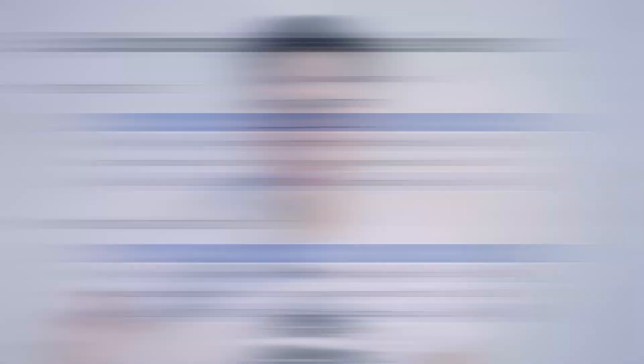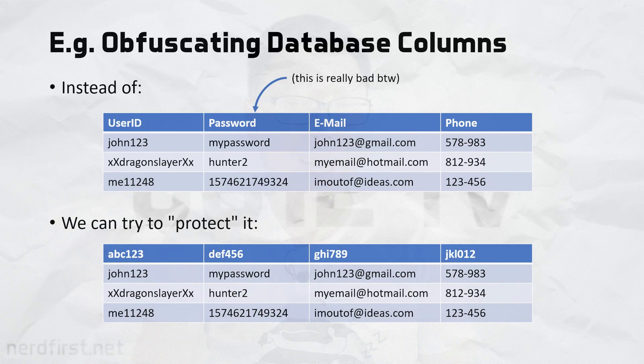One fairly fundamental fallacy is: what if I tried to hide away how I tried to protect my data? Let's say I have a database and I'm going to try and name my columns strange things. The thought here is that if an attacker doesn't understand how my system works, it would be more secure. That is what we call security through obscurity.